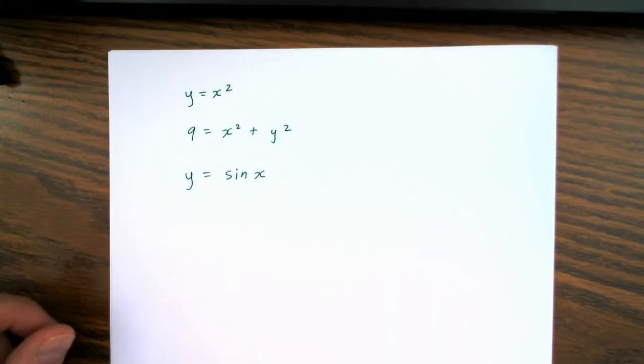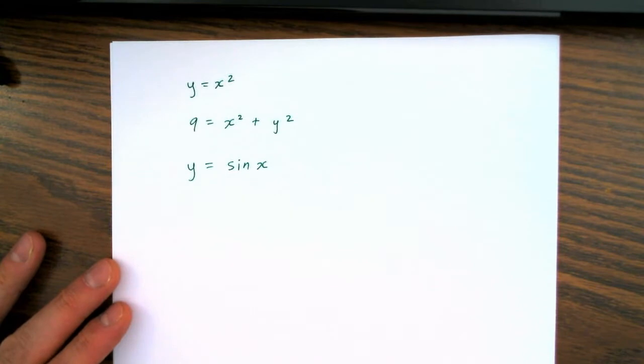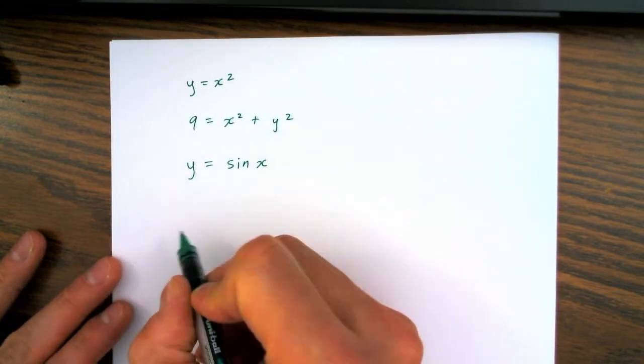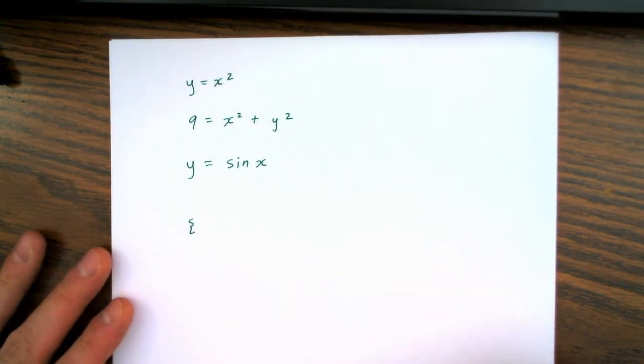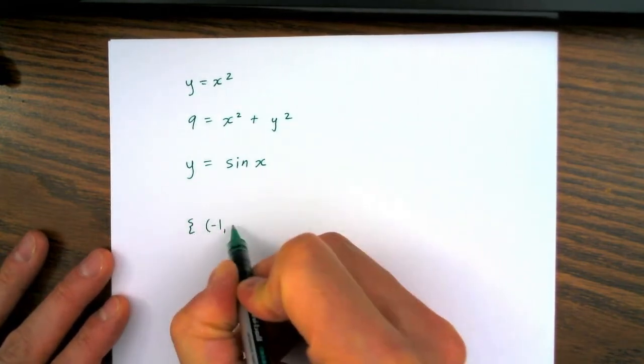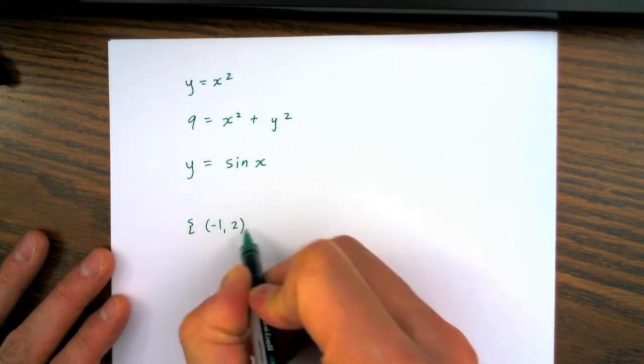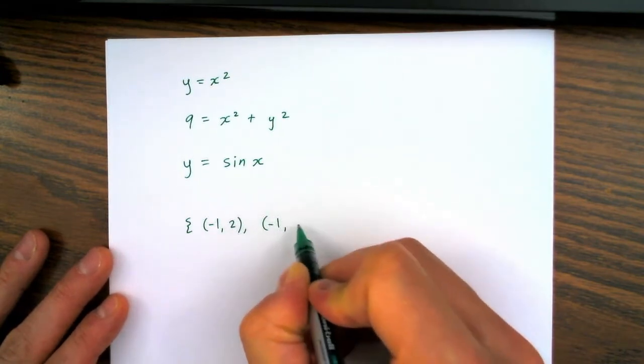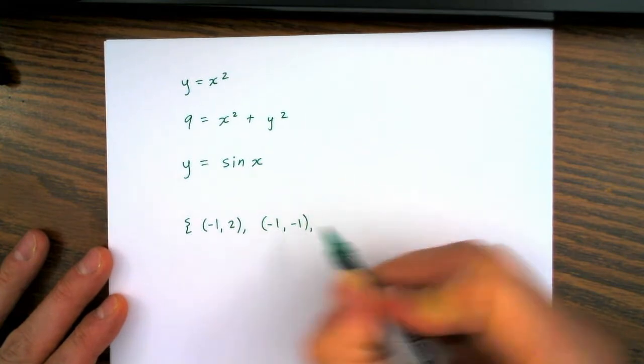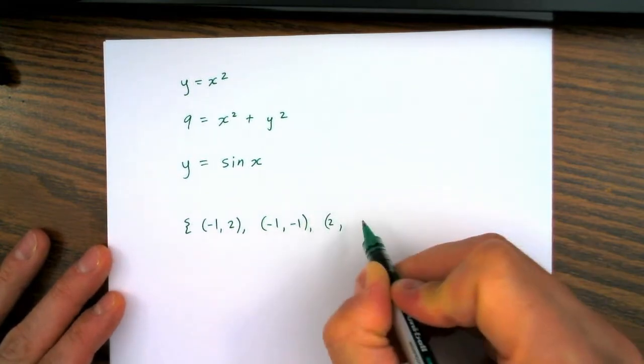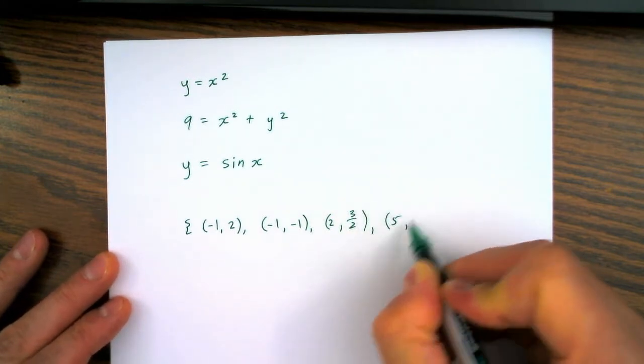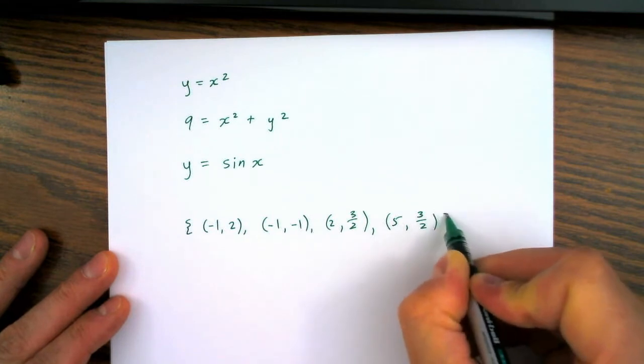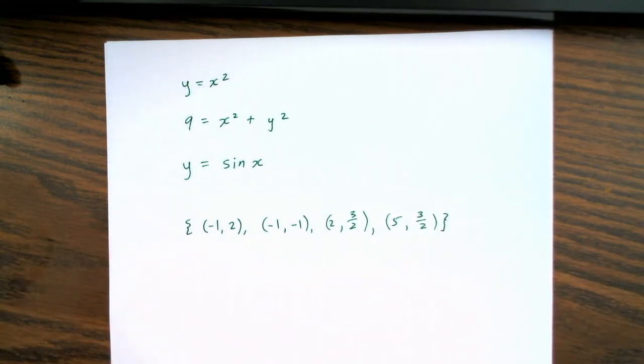We can take these points and we can represent them in a different way using a set. And a set uses two squiggly brackets. And inside, we will just simply list the coordinates of the points. And we've represented the relation in yet another format.